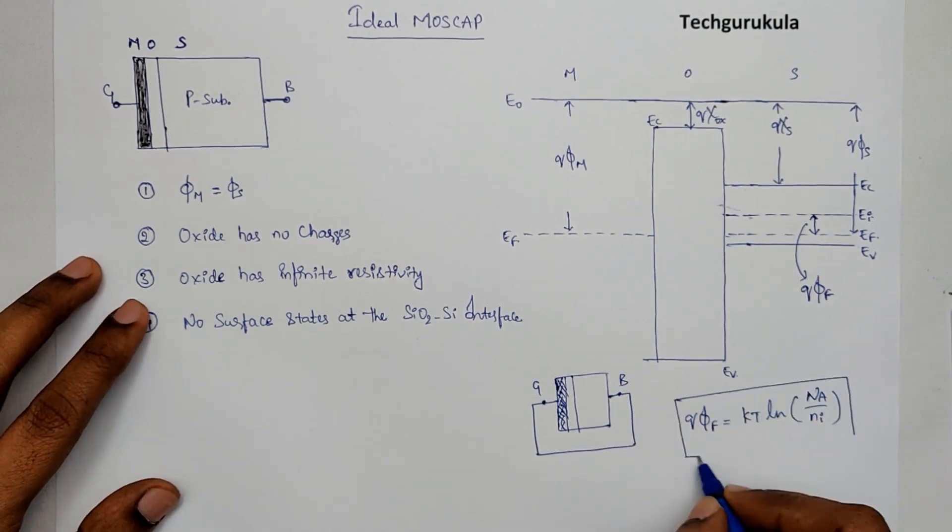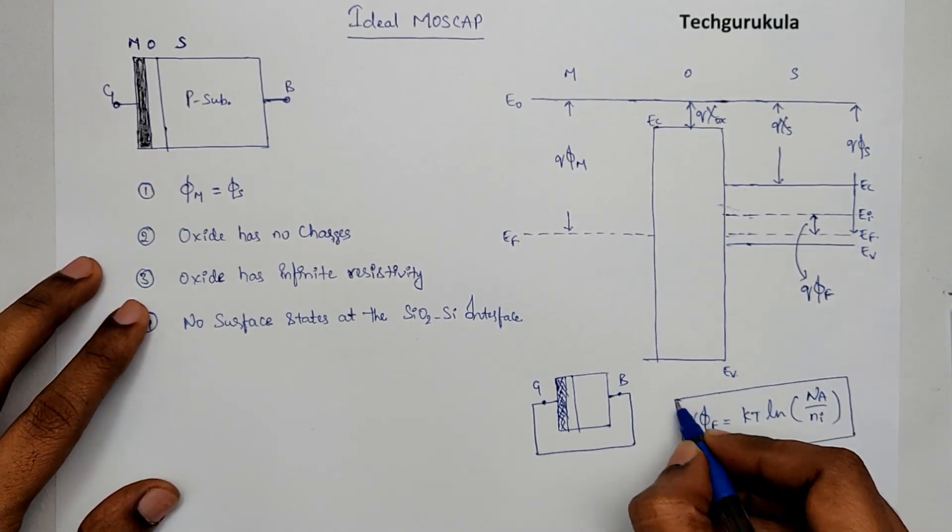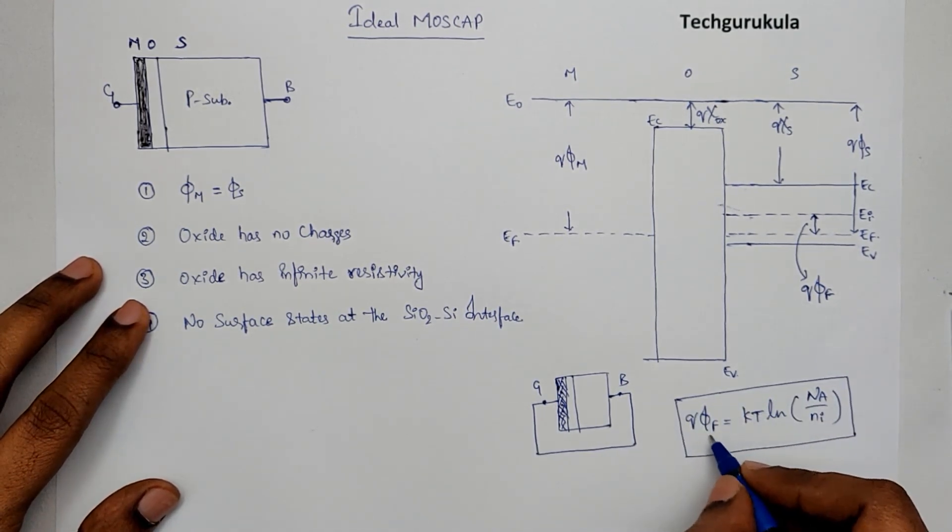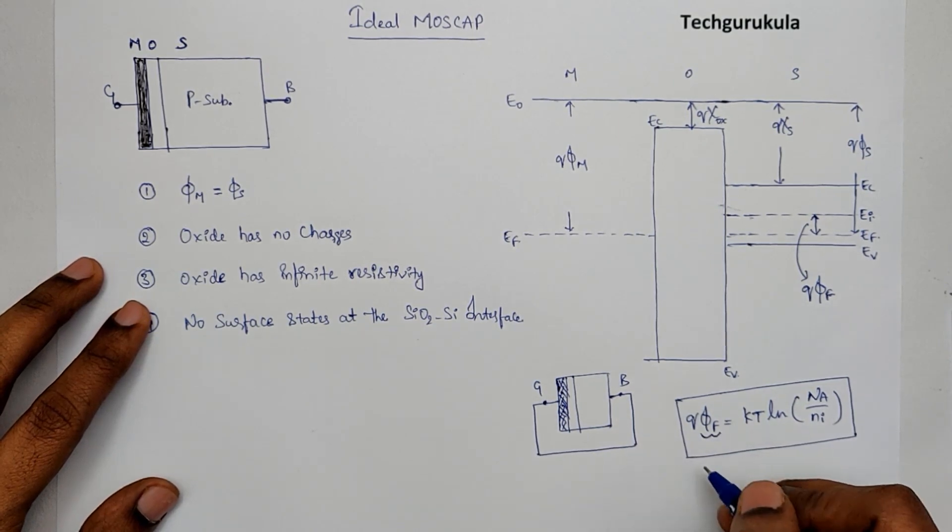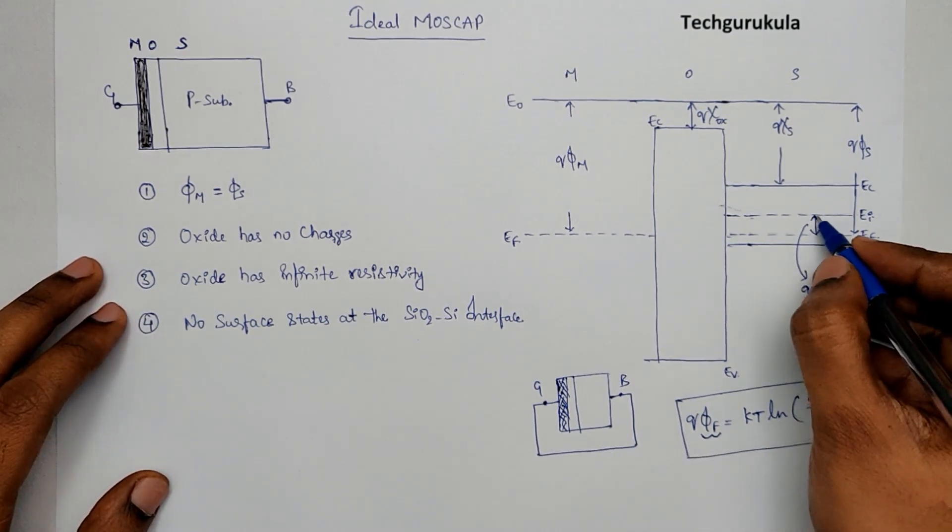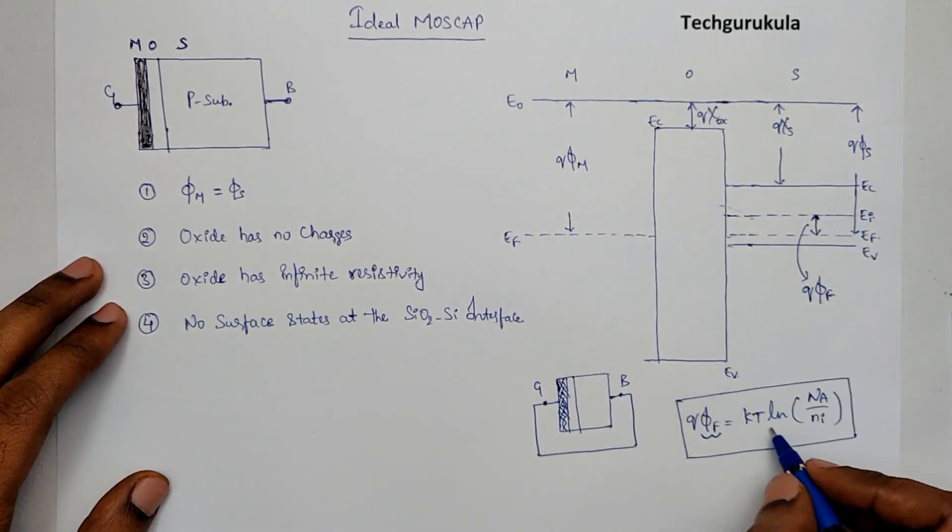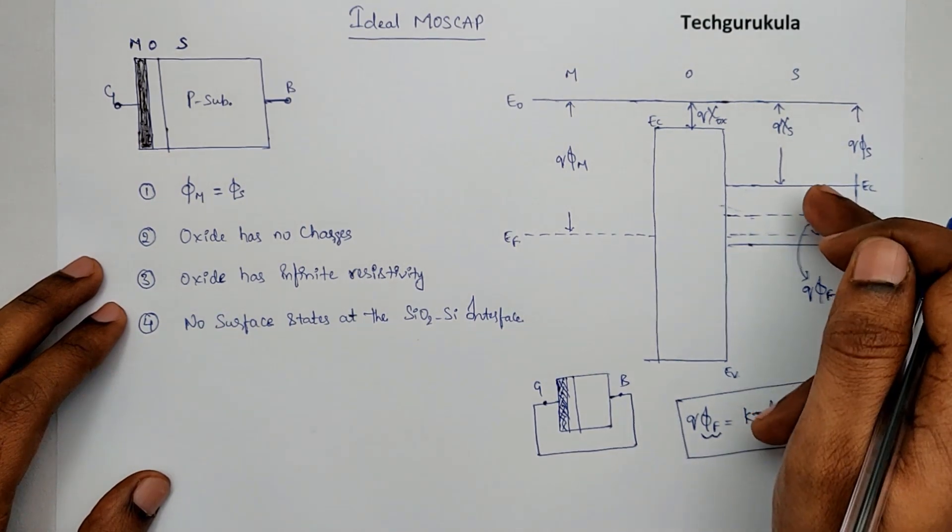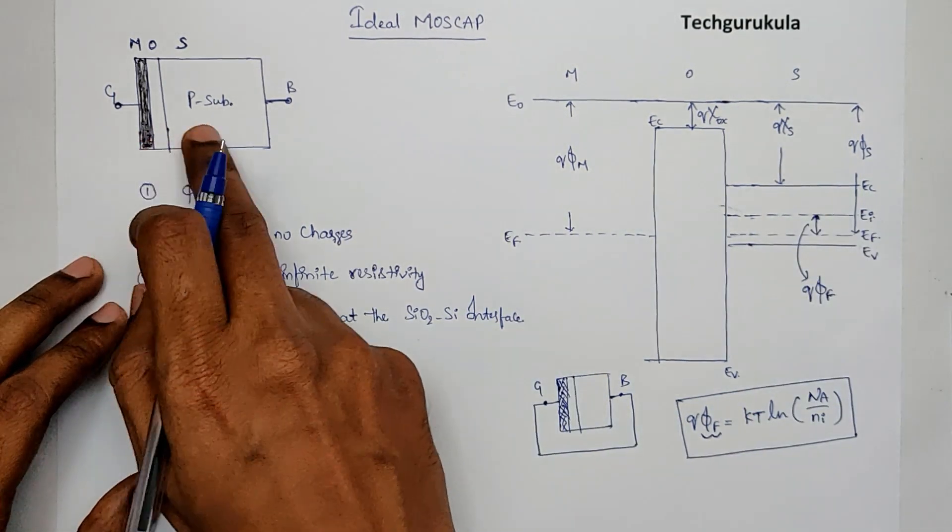Now, we will see in calculation of threshold voltage that this value is a very important quantity. That is this phi F, which is Fermi potential. This is just a measure of saying how much is the doping concentration in the semiconductor underlying the oxide.